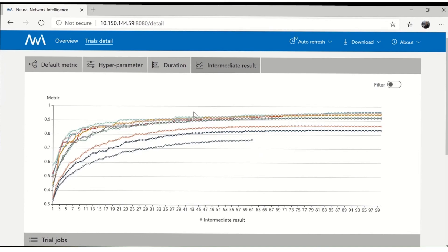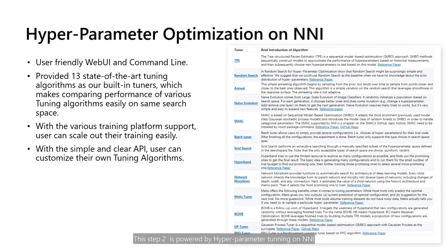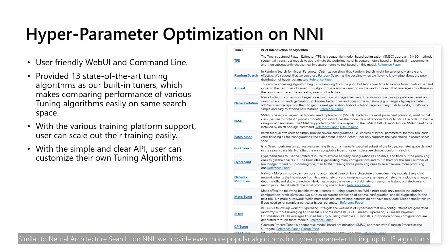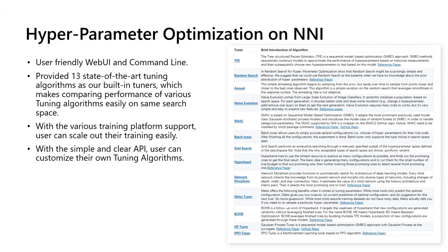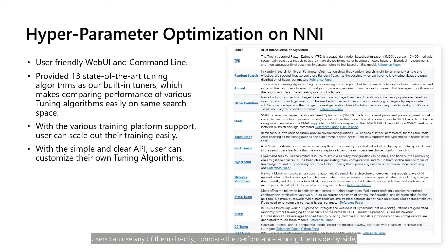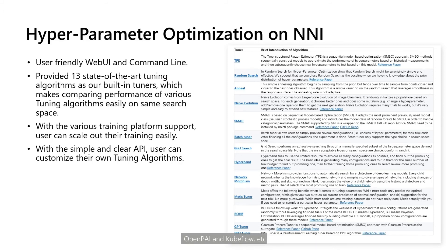This step two is powered by hyperparameter tuning on NNI. Similar to neural architecture search, we provide even more popular algorithms for hyperparameter tuning — up to 13 algorithms. Users can use any of them directly, compare performance among them side by side, and scale out the tuning task easily on various training platforms, such as remote servers, Azure VM, Philly, DLTS, OpenPAI, and Kubeflow, etc.